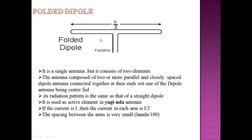This is the folded dipole antenna, which has a fold shape. It can be used as the active element in a Yagi-Uda antenna. It is a single antenna but consists of two elements. The current flowing through the antenna is I, and each individual arm carries I/2. The spacing between the two arms is lambda/100, which is very small. It is used as the active element in the Yagi-Uda antenna.